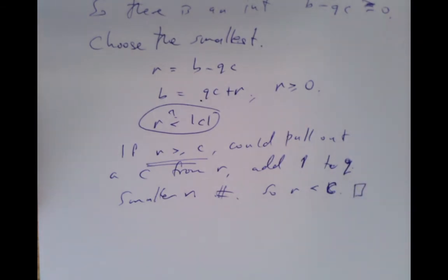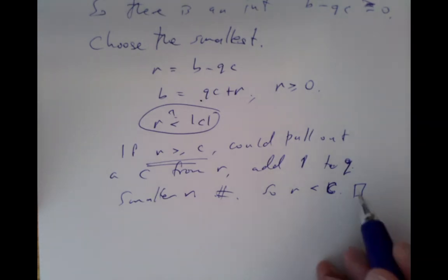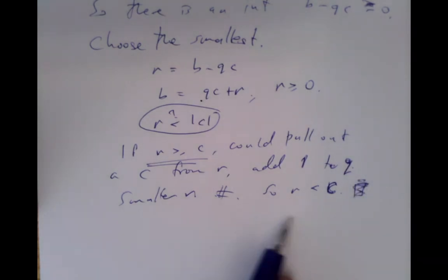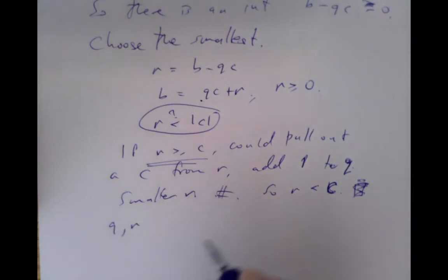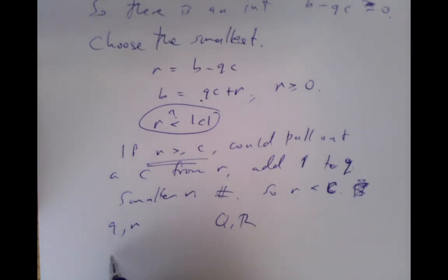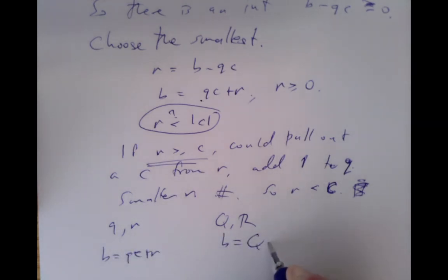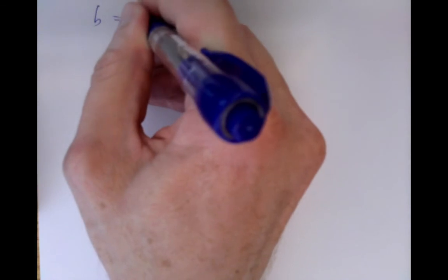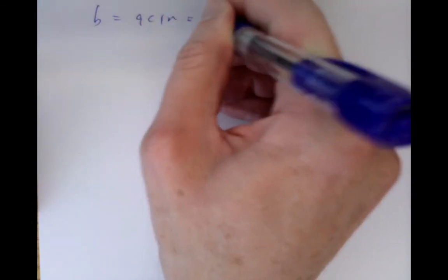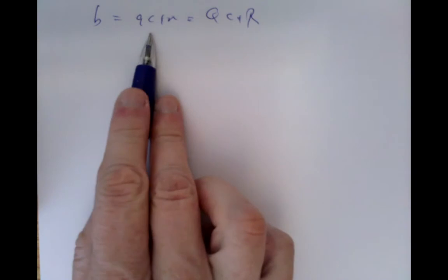That's almost the complete proof, but it didn't prove uniqueness. We've proved that such an r exists; we still need to prove it's unique. Suppose that you have a q and r, and I have a different Q and R, both satisfying the equation. The question is whether they're the same.